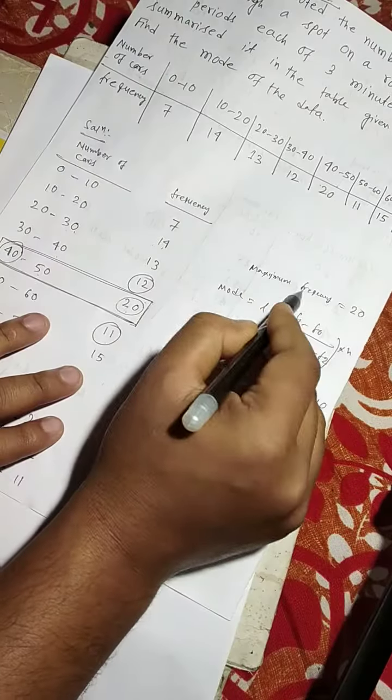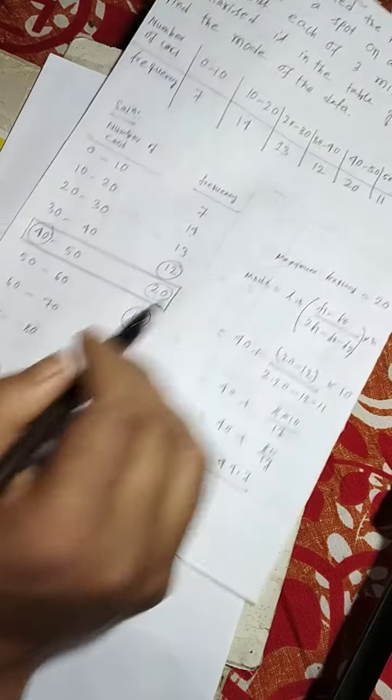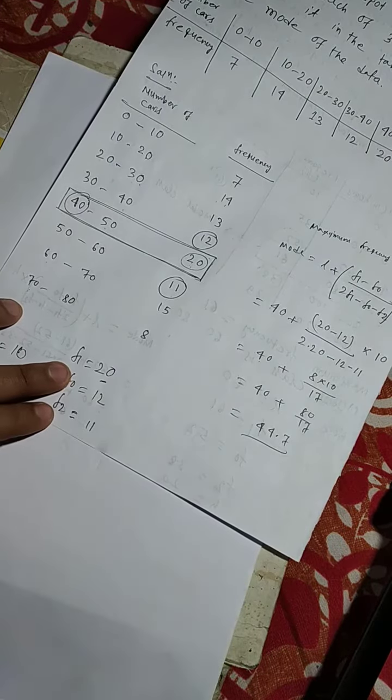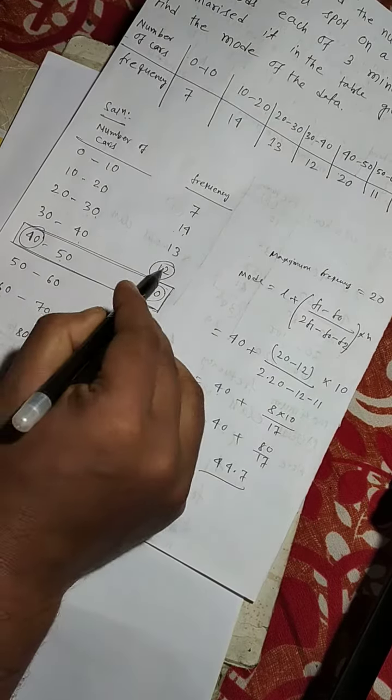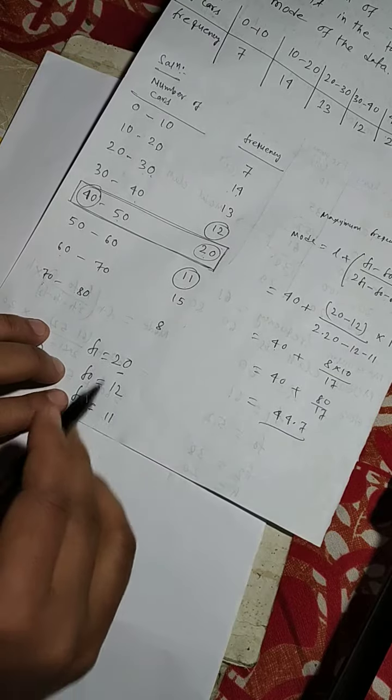Maximum frequency is 20, that means f1 equals to 20. Now, f0 equals to 12 and f2 equals to 11.